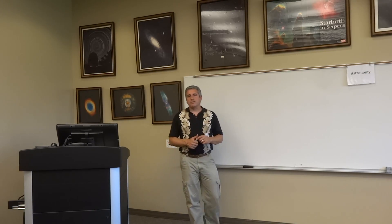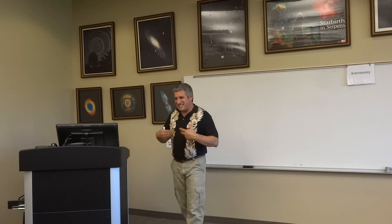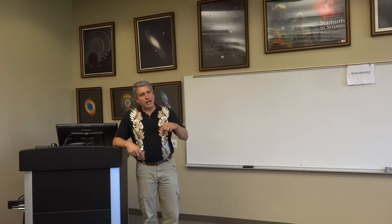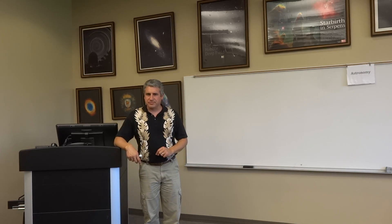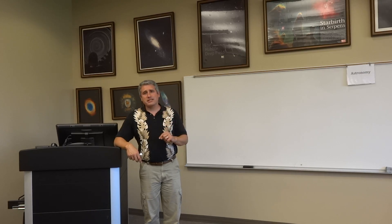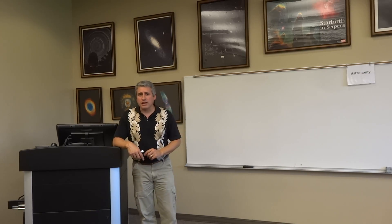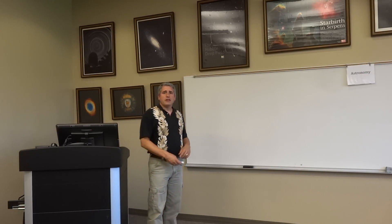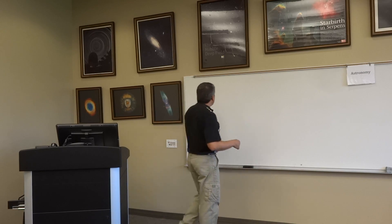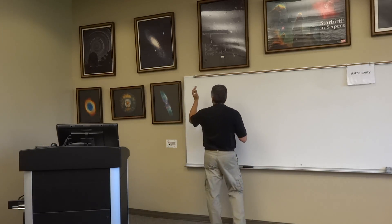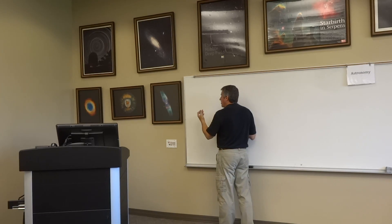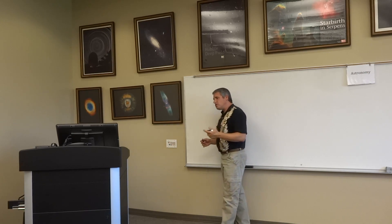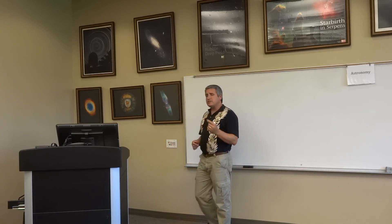In the Copernican model, Copernicus maintained this old idea that things always move in circles. Kepler says he thinks the sun is at the center, but he thinks something else is going on. Kepler's first law, as it's called, discusses the motion of planets around the sun.